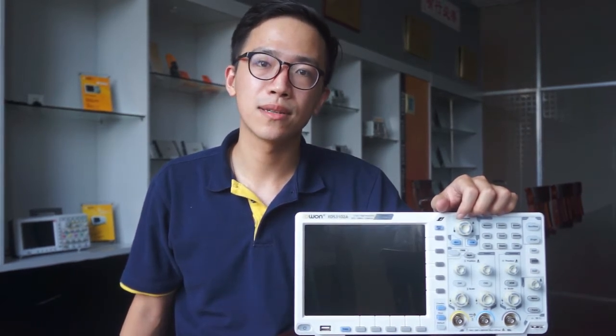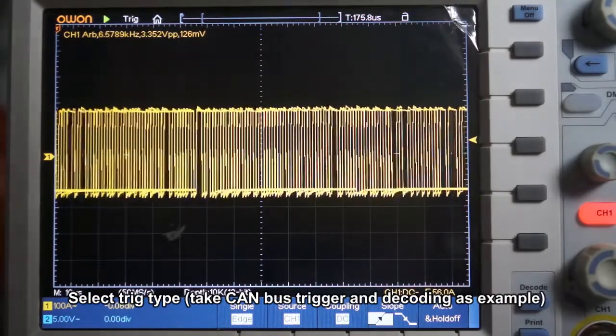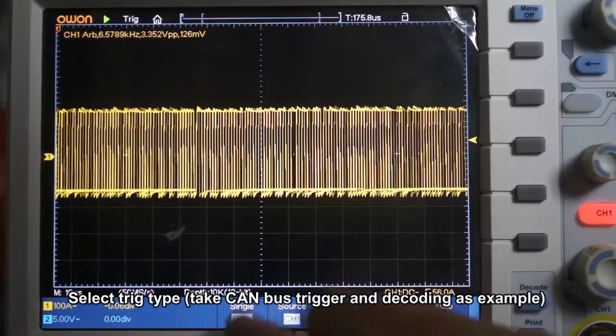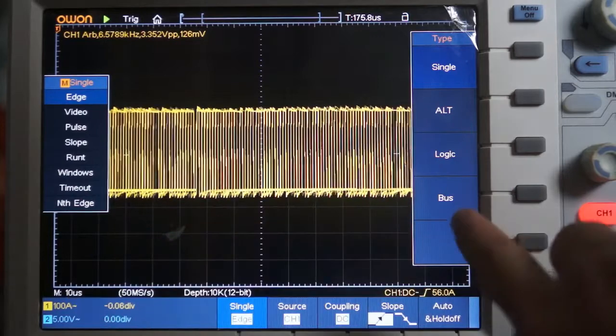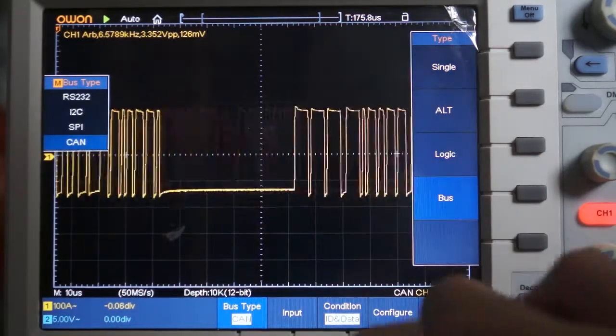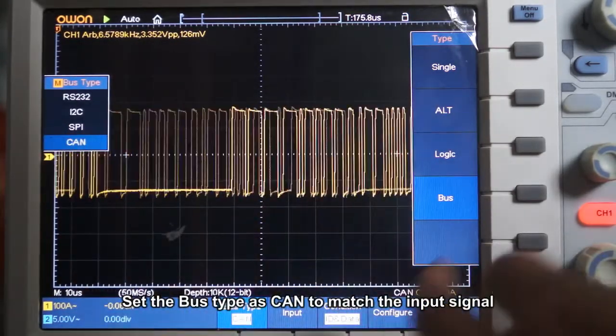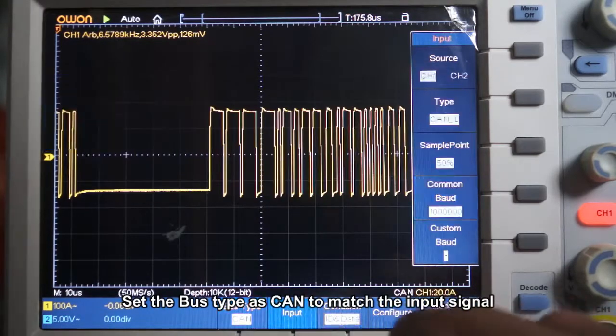Let's see how it works. Select trigger type. Take CAN bus trigger and decoding as example. Set the bus type as CAN to match the input signal.